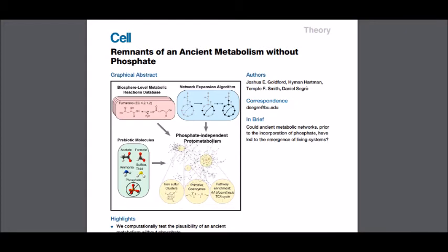Another paper, the 2017 Remnants of an Ancient Metabolism Without Phosphate, describes how early metabolisms could have gotten along without utilizing phosphate, even though phosphate is important to organisms today.